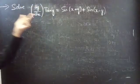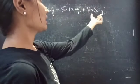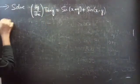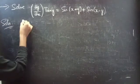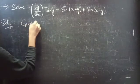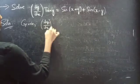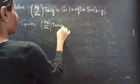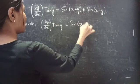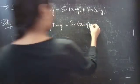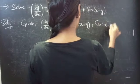Problem. Solve: dy/dx · tan(y) = sin(x + y) + sin(x − y). Solution. Given differential equation: dy/dx · tan(y) = sin(x + y) + sin(x − y).